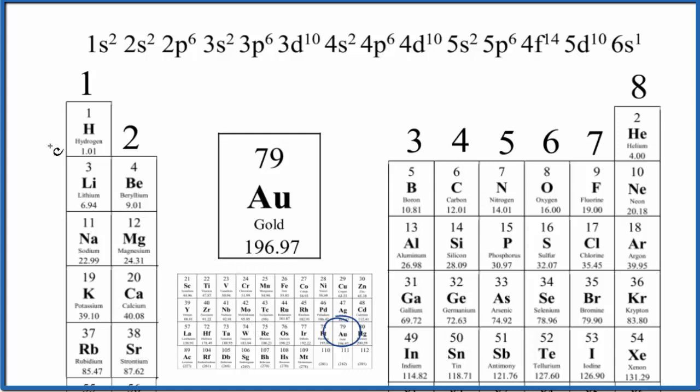For these main group elements, we have group one. All of these have one valence electron. Group two, they have two valence electrons. We skip the transition metals. Group three has three, and so on.